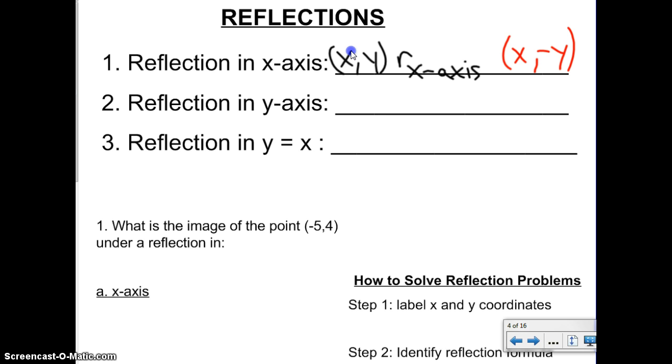I'll write the same thing. We have our original point (x, y). When we reflect it in the y-axis, what do you think is going to happen? Well, if you look at the x-axis, we negated the y. So when you reflect in the y-axis, we're going to negate the x. So it's going to be (-x, y).